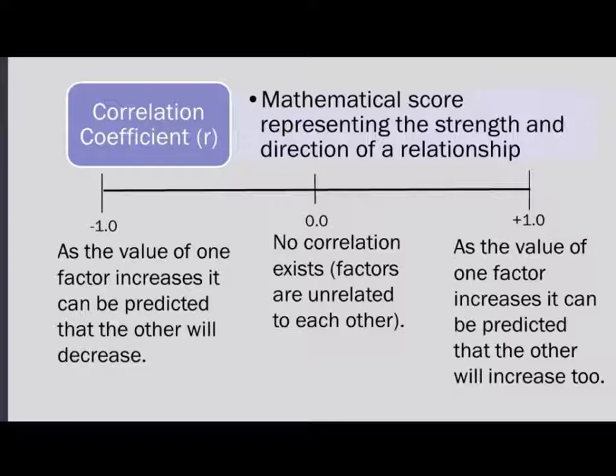The closer your correlation coefficient is to zero, the less likely there is a relationship. If you find a Pearson R of zero, it tells you these factors are unrelated — something like IQ and shoe size, for example. So to summarize direction: a positive number means a positive correlation where variables move together, and a negative number means a negative correlation where variables are inversely related.